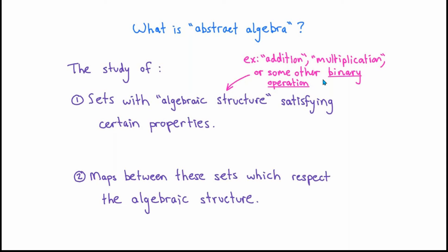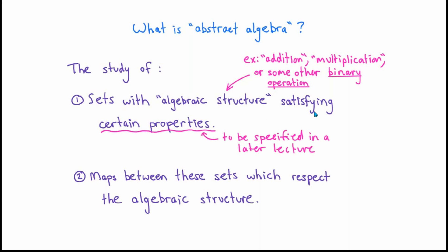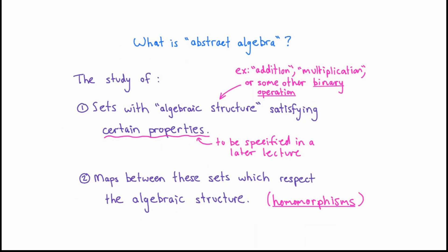Not every rule like that is going to satisfy all of the properties that we need in order to define whatever object we're studying, so this extra phrase 'certain properties' is pretty important, and those certain properties are something that we're going to have to specify in later lectures. I'll give you an example later in this lecture of a map between two sets with algebraic structure which respects the algebraic structure, but as a preview of what's to come, the kind of maps I'm talking about here are what are referred to as homomorphisms. Without getting into details of definitions, let me show you some examples of the kind of sets that we study in abstract algebra.